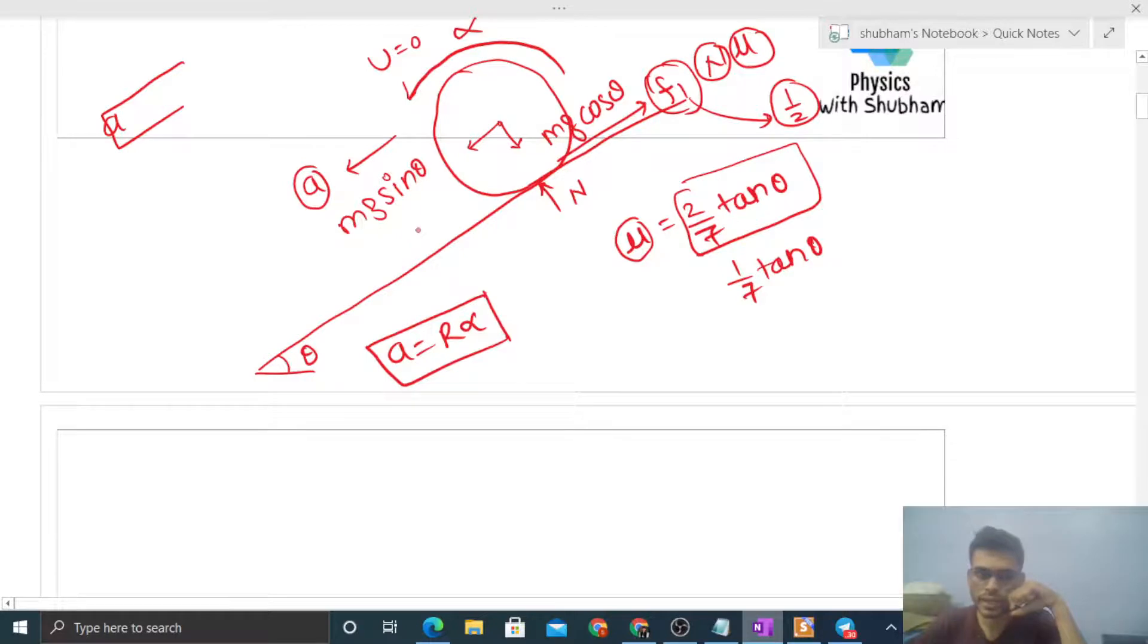Let's see. Initially, acceleration was mg sin theta minus friction force, that was mass into acceleration. And alpha, how will you write? Friction force's torque about center of mass, right? Normal reaction and mg will not have torque, so friction force's torque, that is f into r, that was your I into alpha.